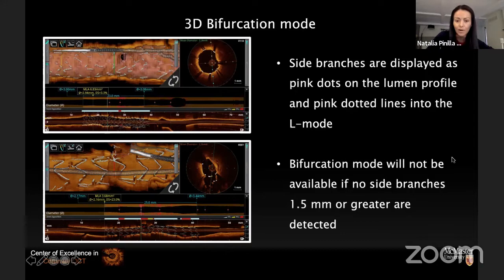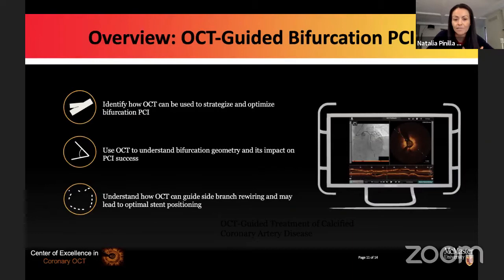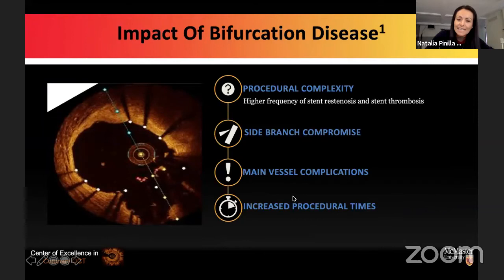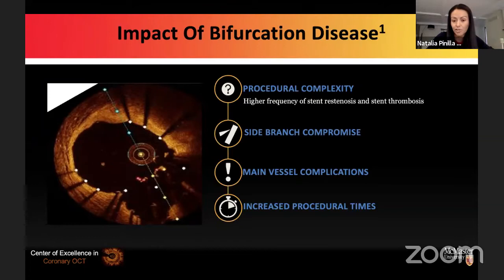A comprehensive assessment of how OCT helps in bifurcation: it helps you identify the strategy, understand the geometry — the angle, the carina tip — and the relation of the side branches with the main vessel for optimal stent positioning. OCT especially impacts outcomes in bifurcation because you can predict side branch compromise. Provisional bifurcation is the best and safest technique, but sometimes we have to do double-stent bifurcation PCI — and if we do, we better do it right, as outcomes with non-optimal double-stent bifurcation are quite poor.